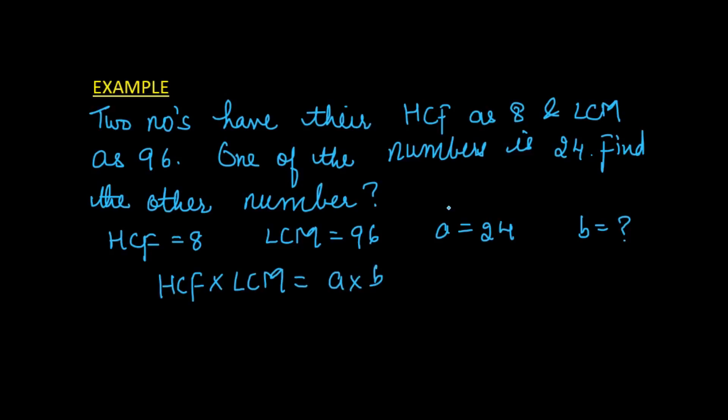So 8 × 96 = 24 × b. From here we get b = (8 × 96) / 24. Simplifying, we get b = 8 × 4 = 32. So the other number is 32.